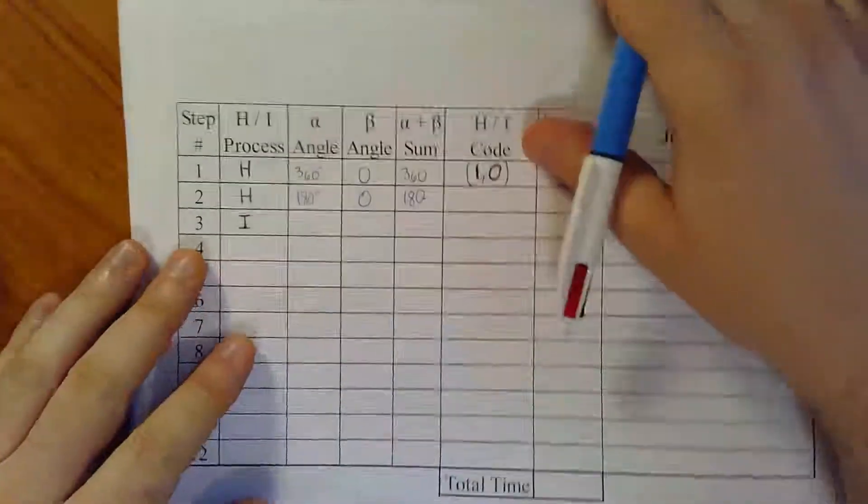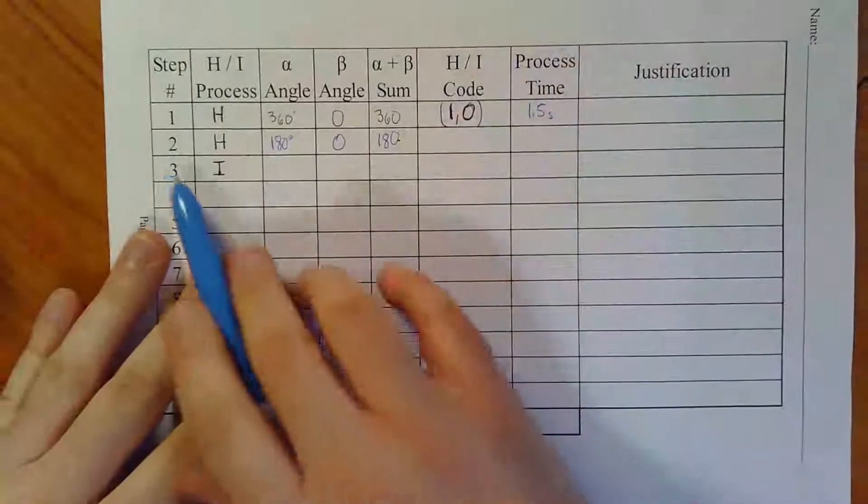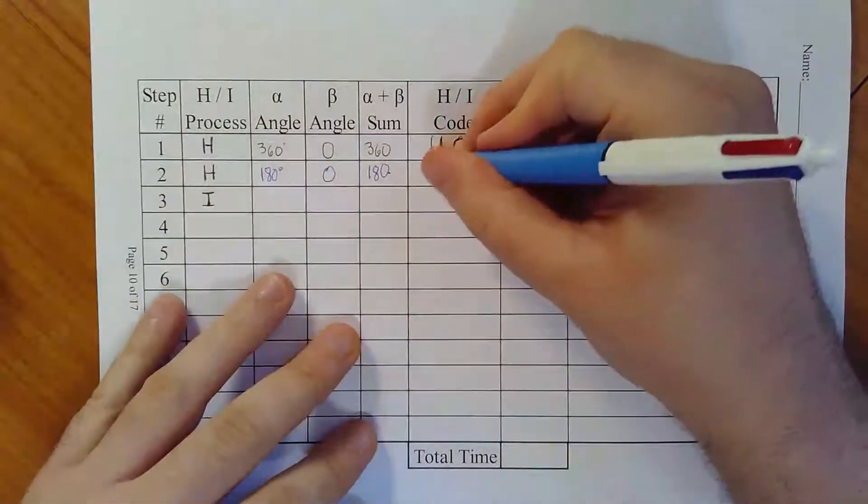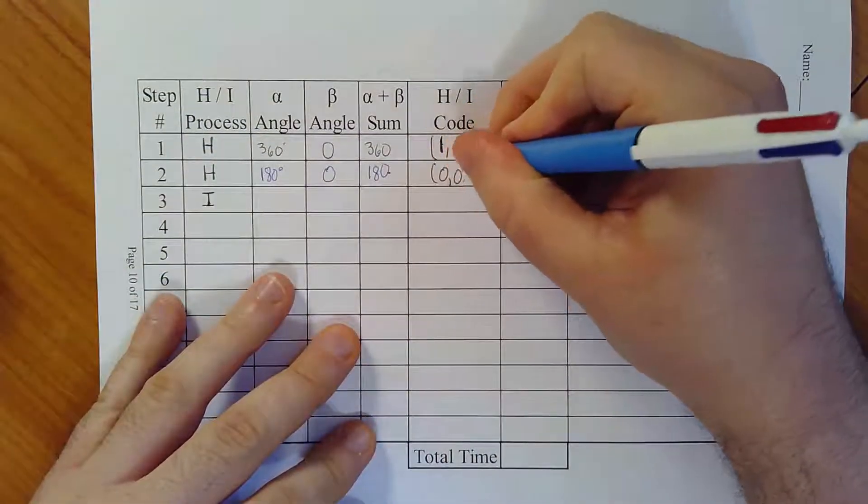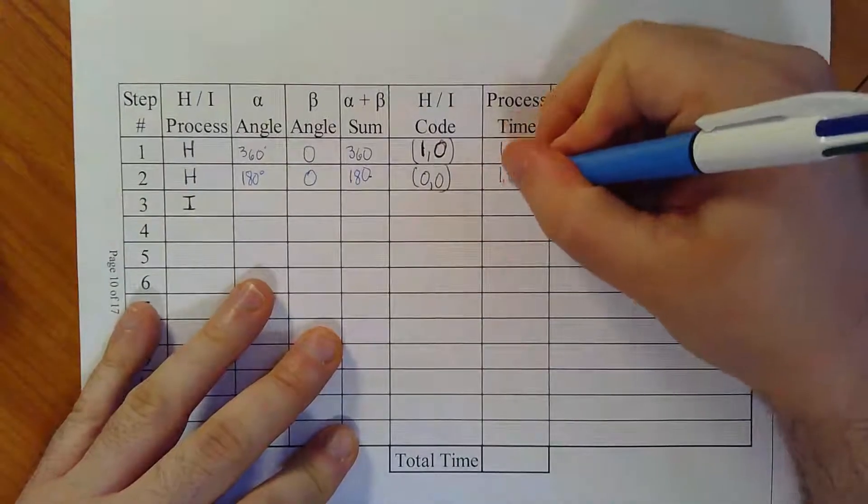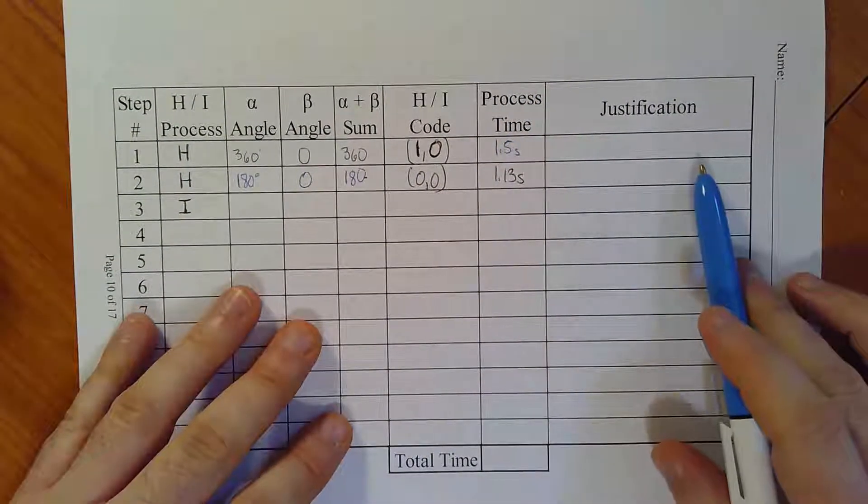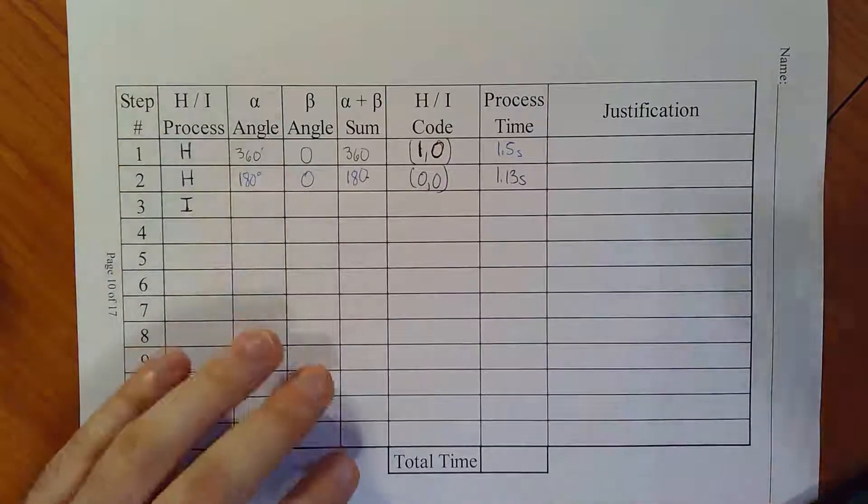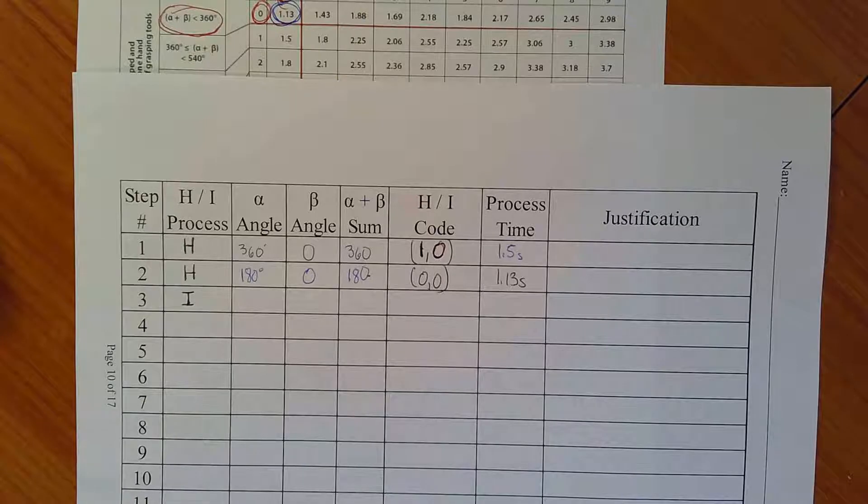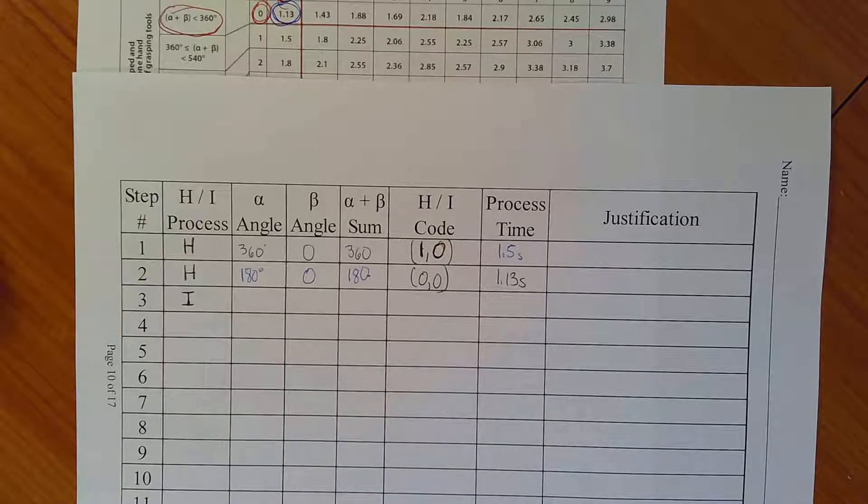So I'm going to go back here and finish this line. Step number two. Handling my code in black is zero comma zero fastest process I can have. Great. One point one three seconds. And I'll leave the justification because I don't need to remind myself how I got there. Okay, I'm right at 15 minutes. So I'm going to stop. Take a break. And then we'll start from here and do the next step in the process until we wrap up. Okay, take a break. See you in a second.